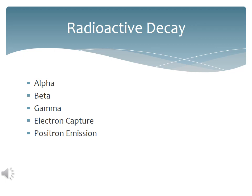The following slides discuss five common types of radioactive decay: alpha decay, beta decay, gamma decay, electron capture, and positron emission.